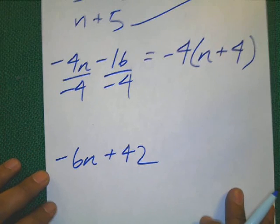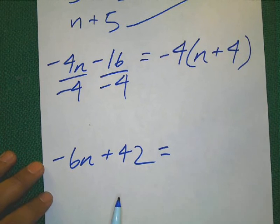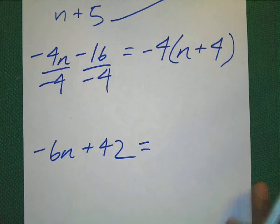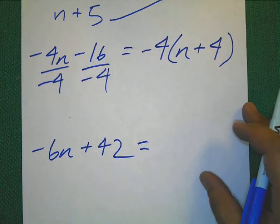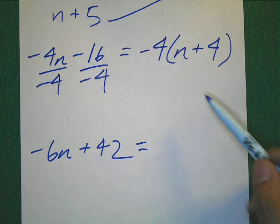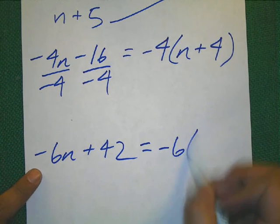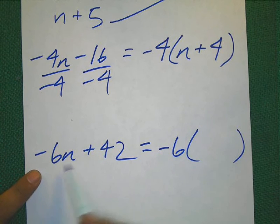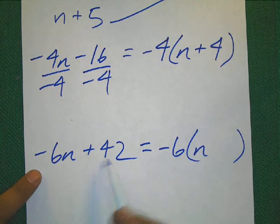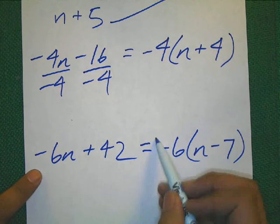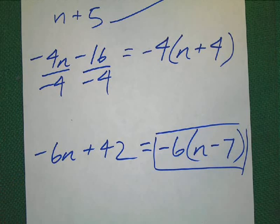Finally, our last one. Negative 6n plus 42. You may have observed that I'm actually starting to skip a few more steps. I'm just banking on the fact that you can see how simple this is. Now, you know that negative 6n and 42, the greatest common factor is negative 6. You're going to write your parentheses. Bring out the negative 6. It's n. 42 divided by negative 6 is negative 7. There's your final expression.